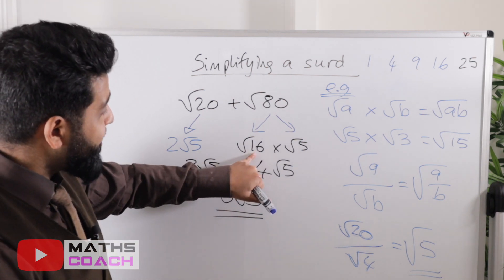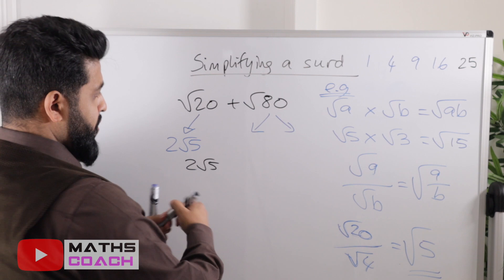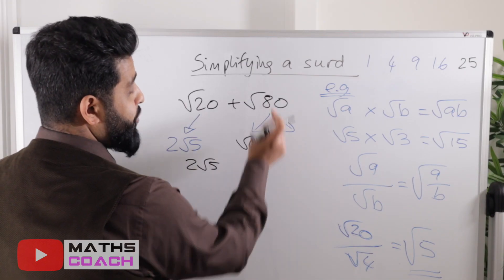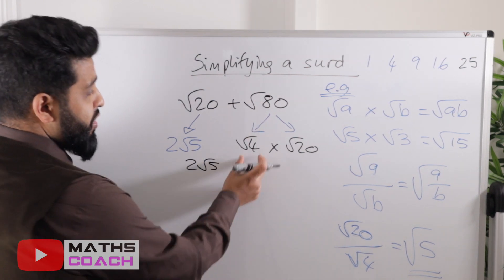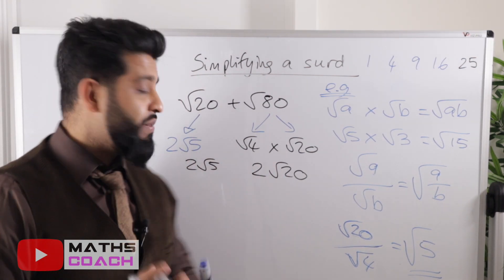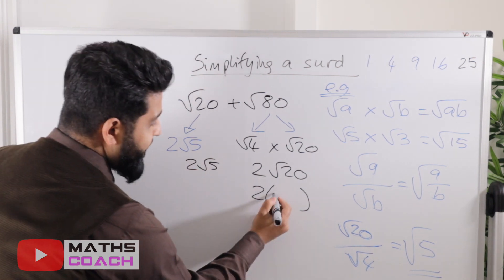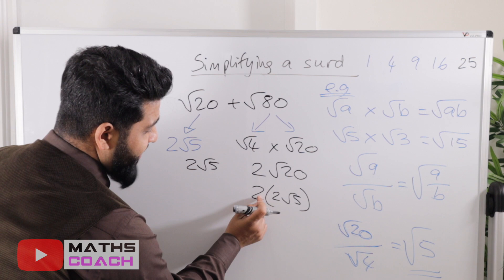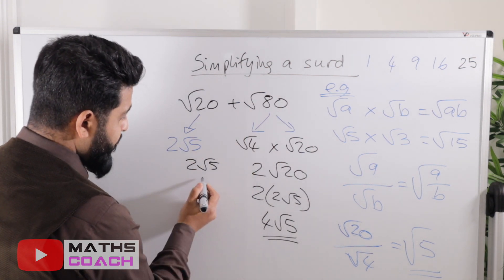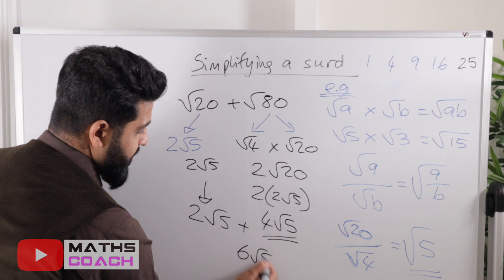If you didn't know that 16 divides 80 and started with 4 instead: √80 = √4 × √20 = 2√20. But √20 can be broken down to 2√5, so 2 × 2√5 = 4√5. You still get 4√5 for √80. Adding: 2√5 + 4√5 = 6√5. It's the same answer — just a few extra lines of working.